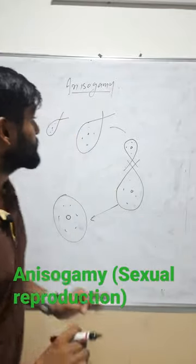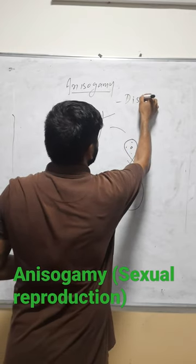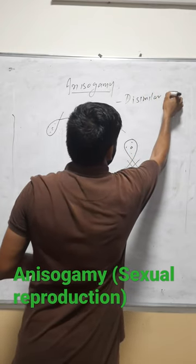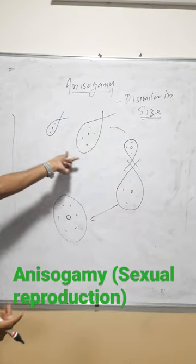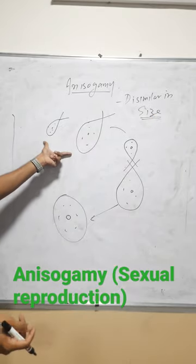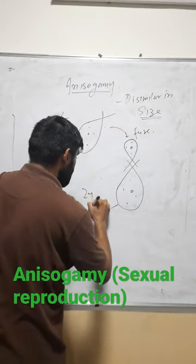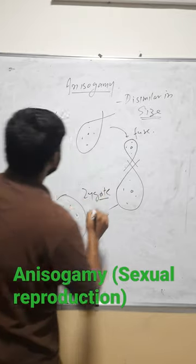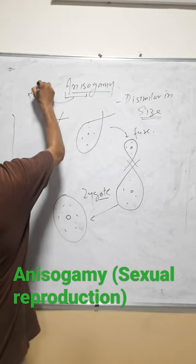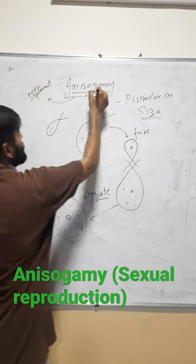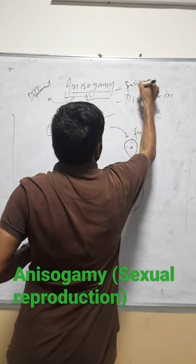Anisogamy is a type of sexual reproduction in which gametes are dissimilar in size. Here, two fusing gametes — this one and this one — are dissimilar in size and will fuse. After fusion they will form a zygote. 'An-iso' means different, and 'gametes' refers to the fusion, so anisogamy involves the fusion of different types of gametes.